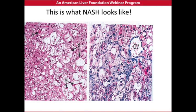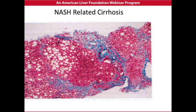NASH looks like this on biopsy. The left side shows the liver cells, which are the pink cells with little dots in them, and you can see that many of them have clear areas, which is the fat. On the right is more advanced liver disease, where the blue represents inflammatory cells and scarring. This is what cirrhosis looks like — a nodule of the liver surrounded by blue fibrosis — and this is when the disease has progressed to significant liver damage.